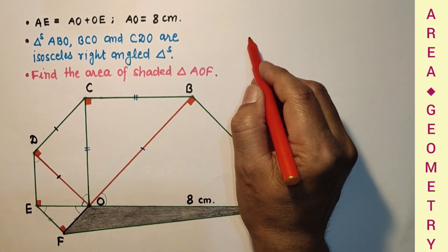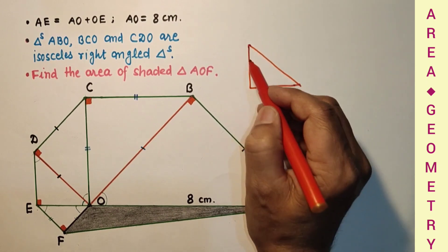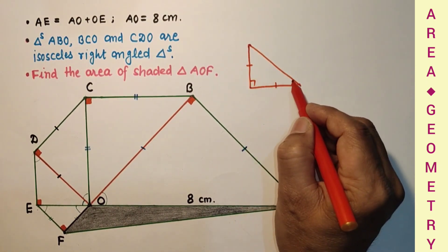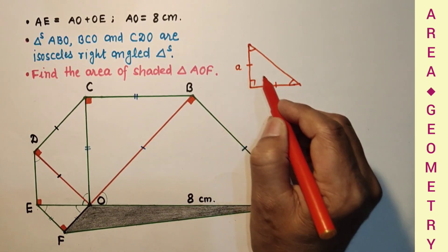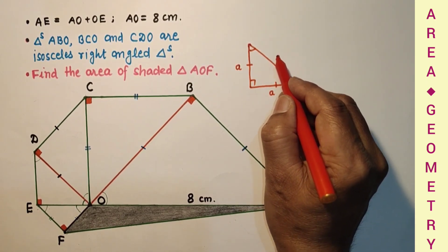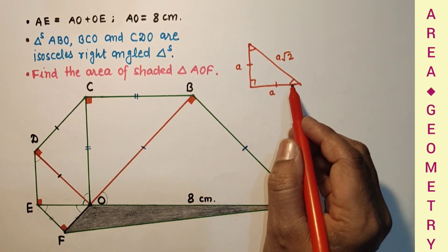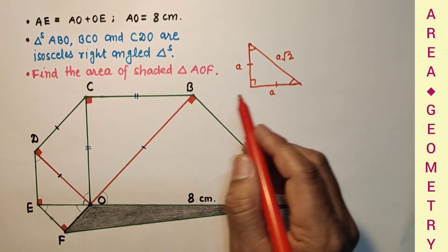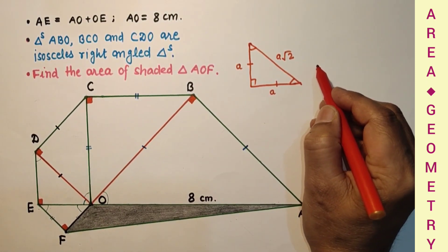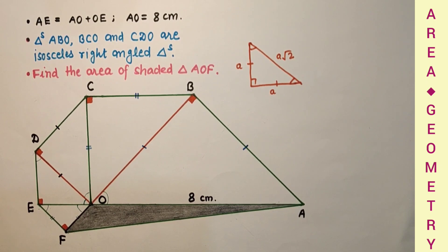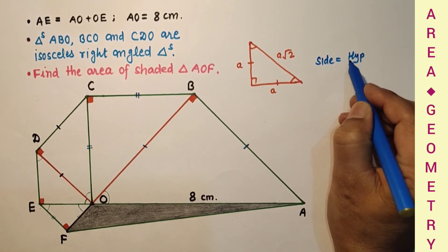Now for a right angle triangle which is also isosceles — let us suppose this is an isosceles right angle triangle — this side is equal to this side, and the angles are 45°-45°. If this side is A, then by Pythagoras theorem: A² + A² equals the hypotenuse squared, therefore hypotenuse equals A√2. So for an isosceles right angle triangle, if the hypotenuse is given, then the side equals hypotenuse divided by √2.